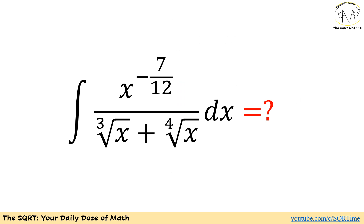Now moving to the second integral. Here I have a fraction: on top x to the power of negative 7 over 12, and on the bottom I have the third root of x plus the fourth root of x. How am I going to solve this?